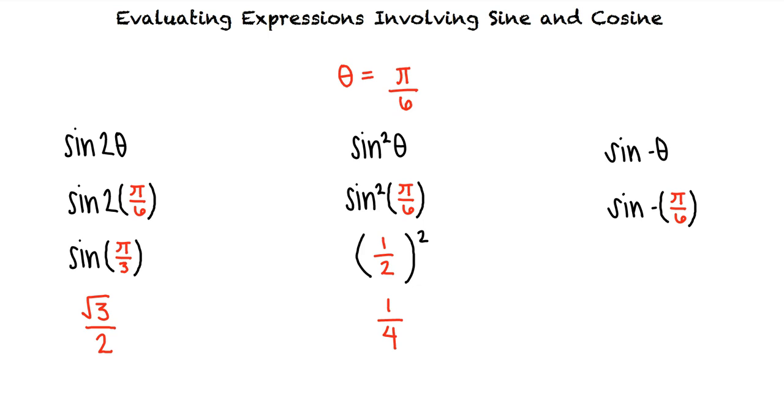That's right. And the coterminal angle of negative π/6 is 11π/6. The sine of 11π/6 is negative 1/2, and this is our final answer.